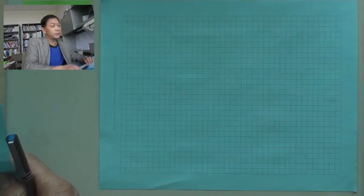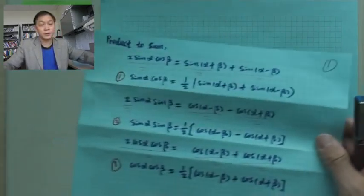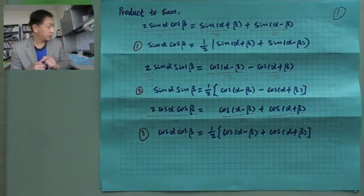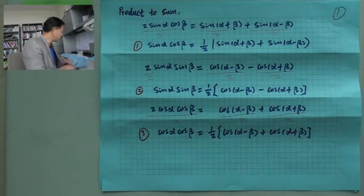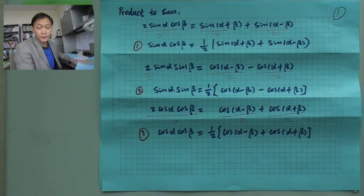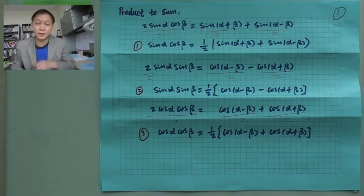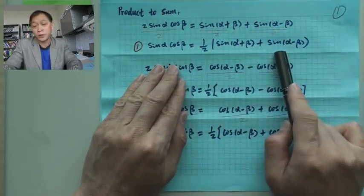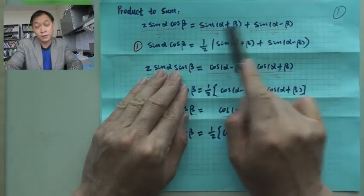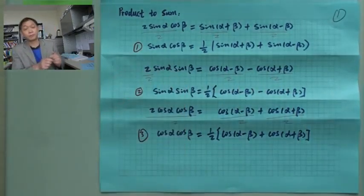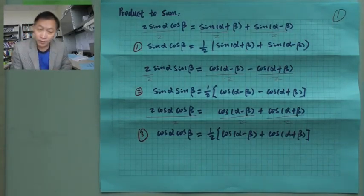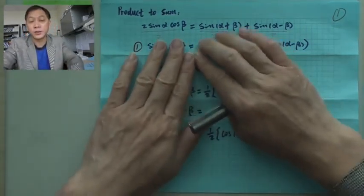Now, sum to product — that sounds very scary, but it is not. You see, if you look here, the right-hand side is sum and the left-hand side is product. You can also go from right to left. Let's look at the first one.